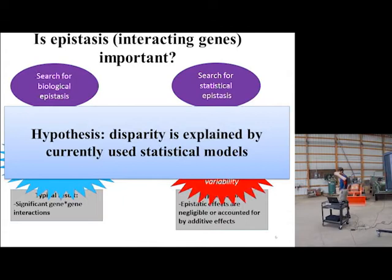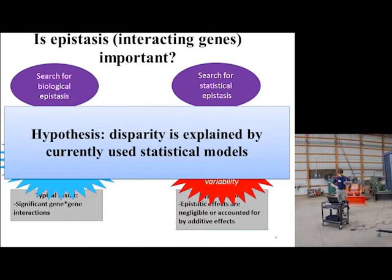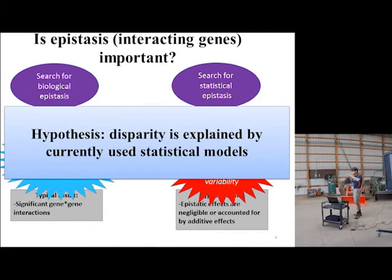Then me and my colleagues, if we do a search for statistical epistasis, we will use arguably oversimplified statistical models and we will conclude that epistasis is not important. So we have two subfields within the field of crop genetics, and they come to polar opposite conclusions on the importance of the interaction of genes. I argue that this is a problem and there is a knowledge gap.